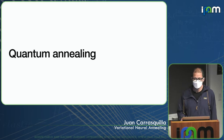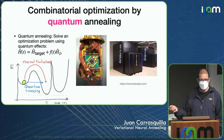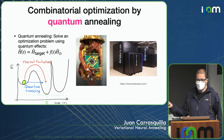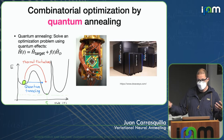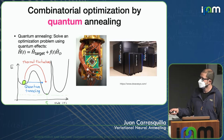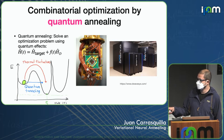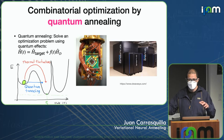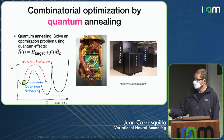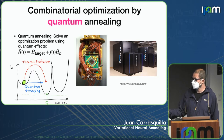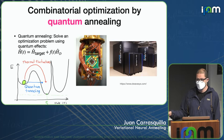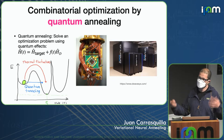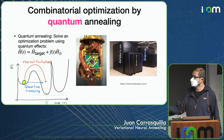Now I'll introduce quantum annealing, another algorithm to solve combinatorial optimization problems. It's based on the idea that you supplement the target Hamiltonian with another Hamiltonian that induces quantum fluctuations. Through quantum mechanical fluctuations and quantum tunneling effects, you can hopefully traverse the landscape of solutions faster and find better solutions than simulated annealing. This is the inspiration for technology behind companies such as D-Wave, which produces quantum annealers.